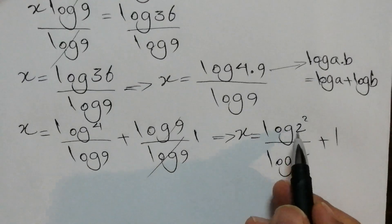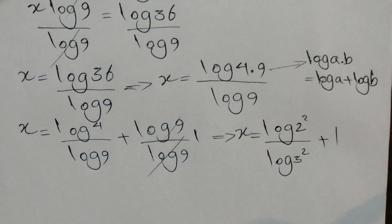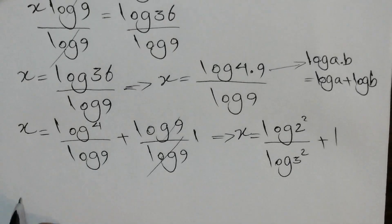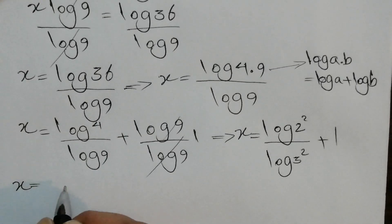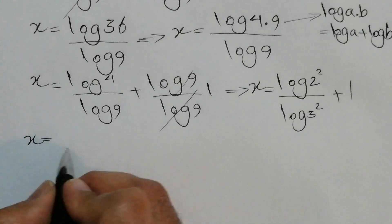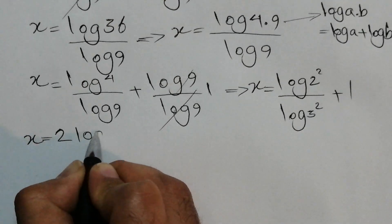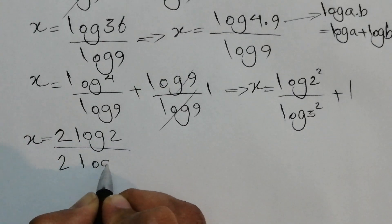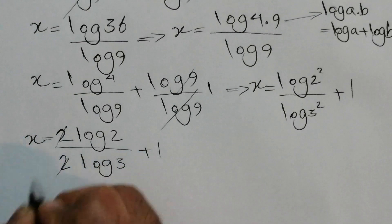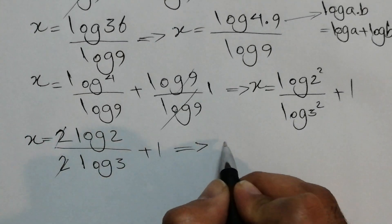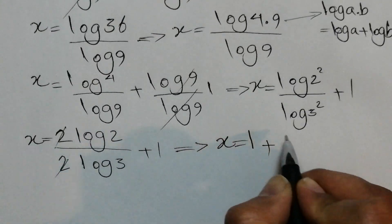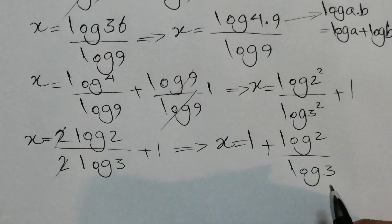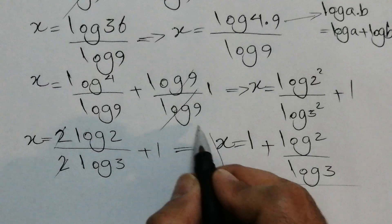Again, based on the first law, this is an exponent here. Log a to the power of b is b log a. So here we can rewrite it like this: x equals 2 log 2 over 2 times log 3 plus 1. So they cancel out, and this is the answer: x equals 1 plus log 2 over logarithm of 3. Basically that's enough for this step.